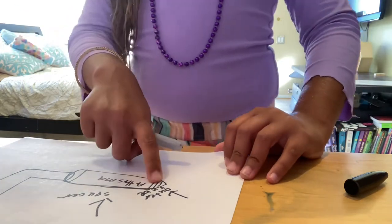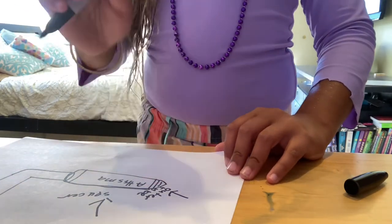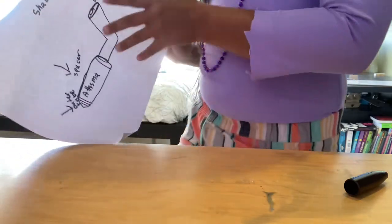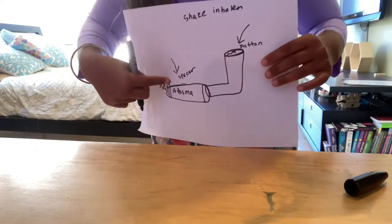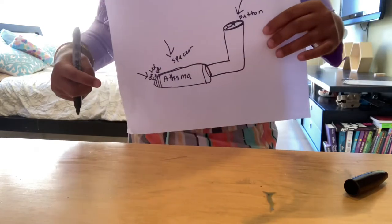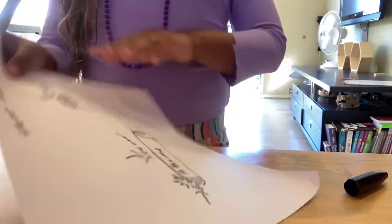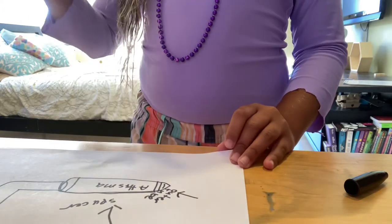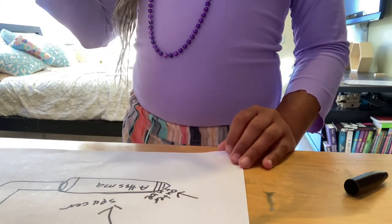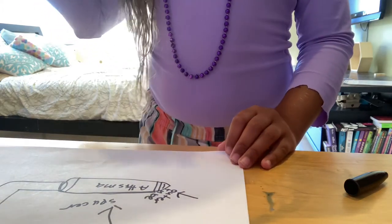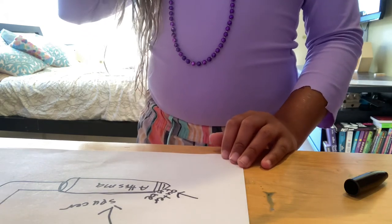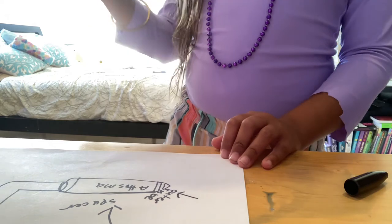So you put the mouthpiece — the outer tube, the mouthpiece — in your mouth, which is the outer tube. The outer tube goes in your mouth. And then push the button when the outer tube is in your mouth, and then suck the air in.